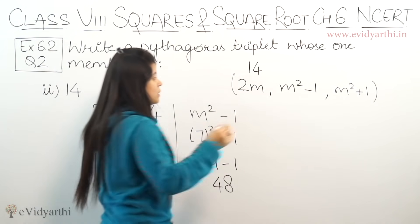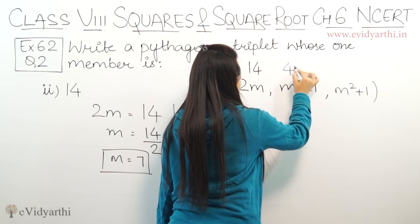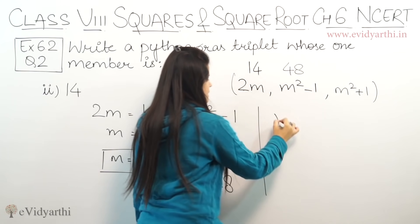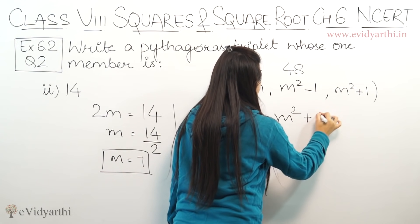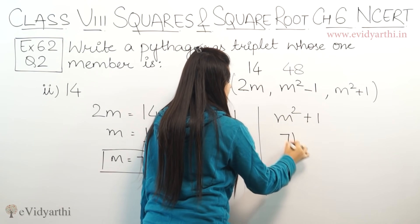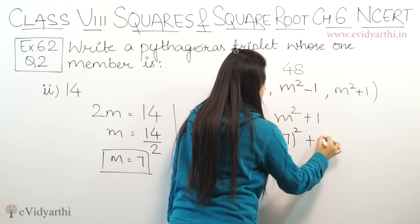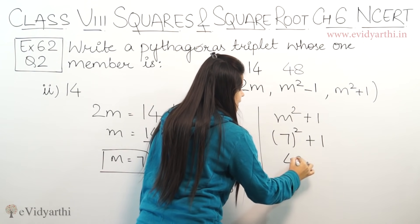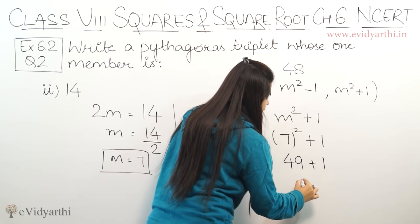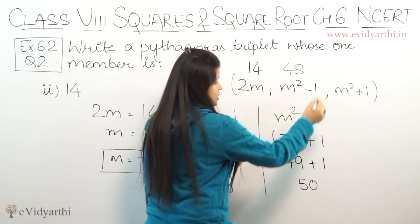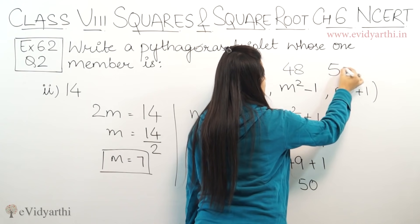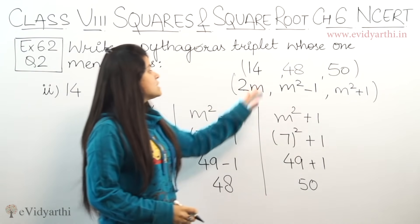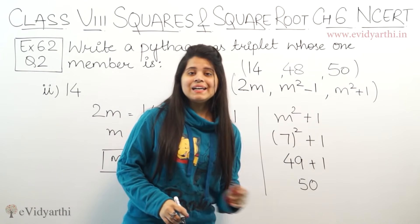49 minus 1 is 48. So the second number here is 48. Now moving to the third number which is m² + 1. So 7² + 1, and 7² is 49 plus 1, which is 50. So the third number is 50. The Pythagoras triplet is 14, 48, and 50.